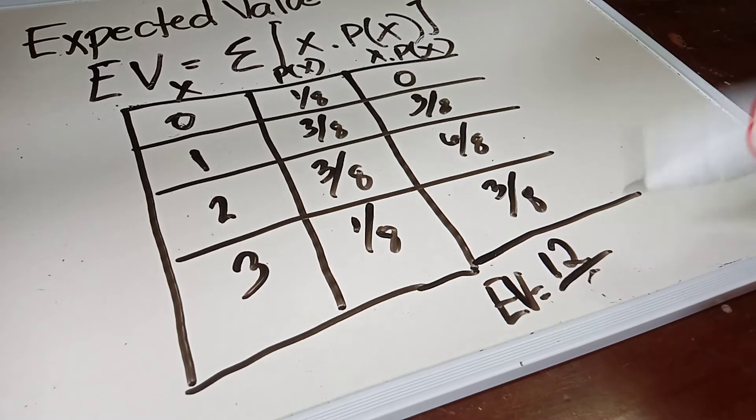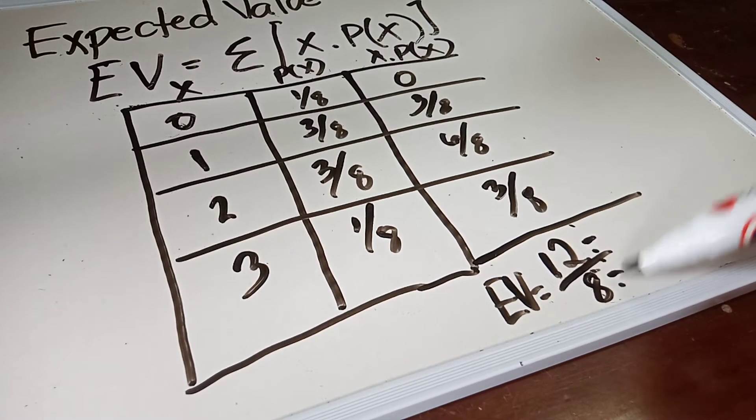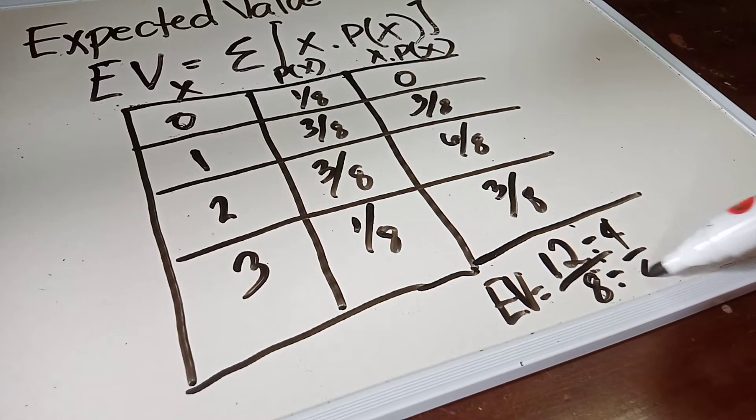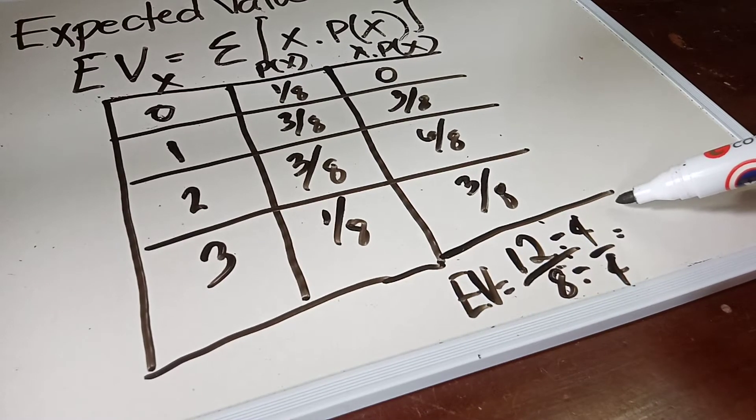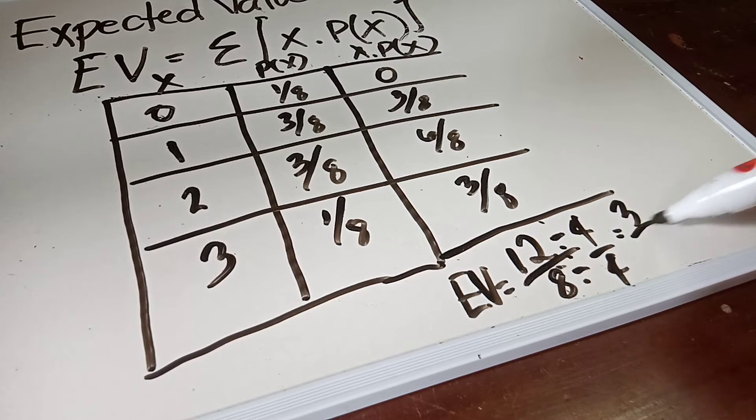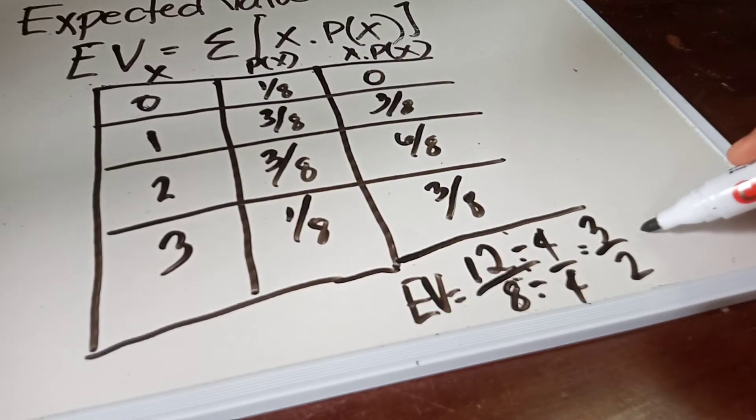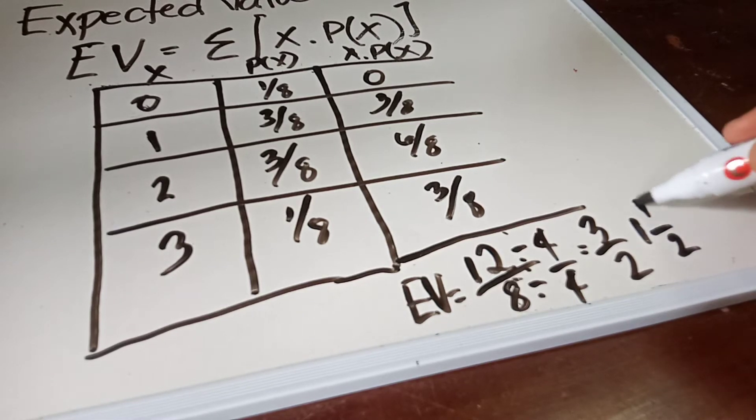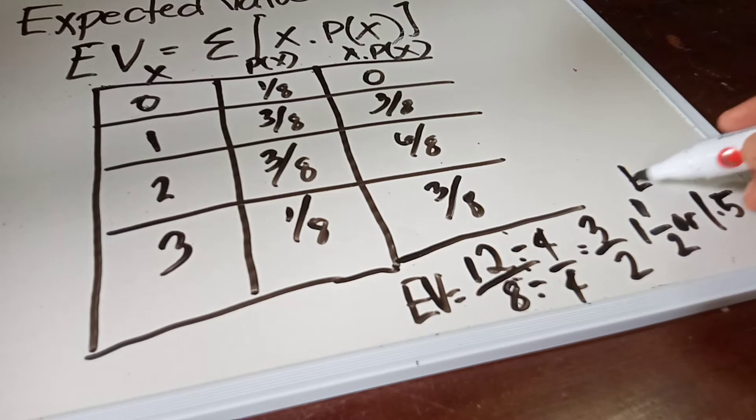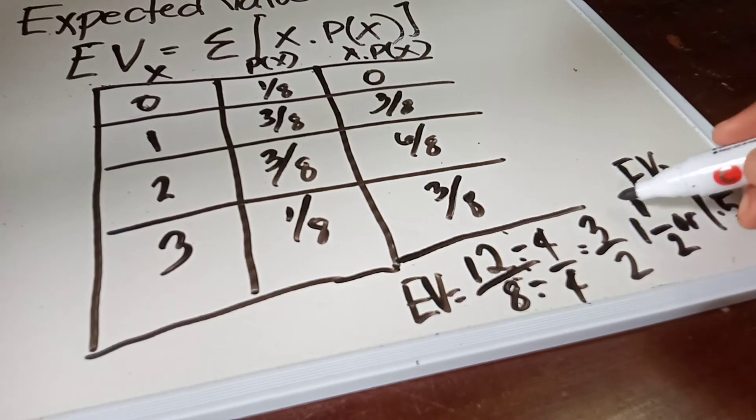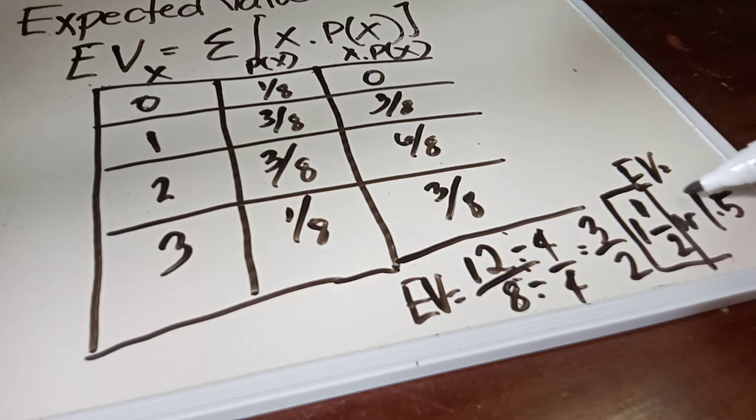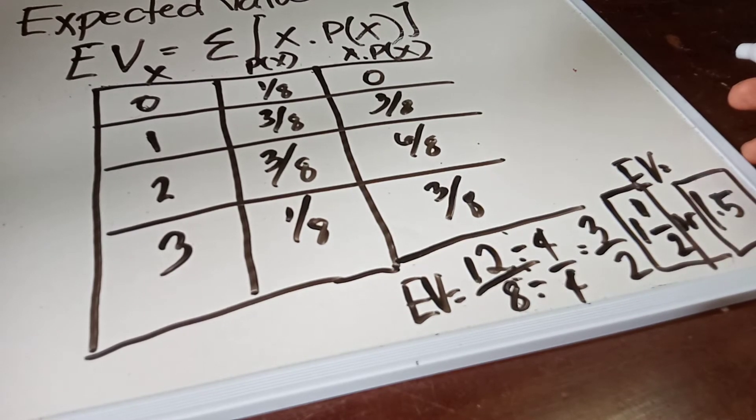Twelve over eight is divisible by four and four, so this will become three over two. And three over two is one and one half. So this will be our answer, or in decimal it is 1.5. So the expected value is equals to one and a half, or in decimal it is 1.5.